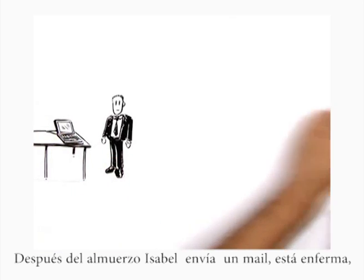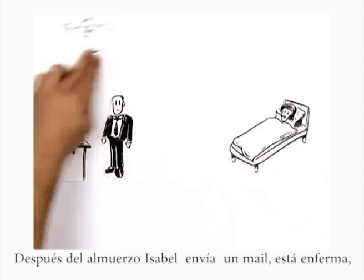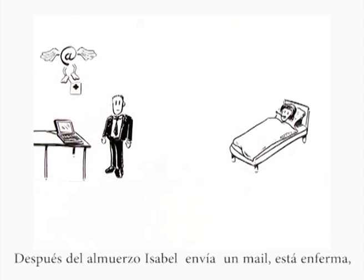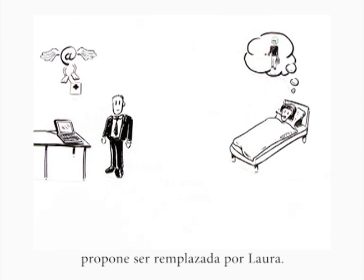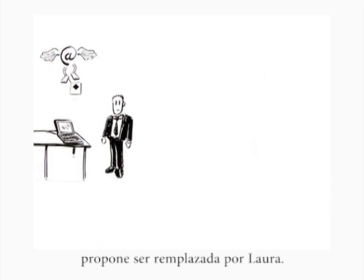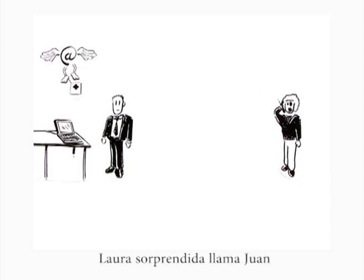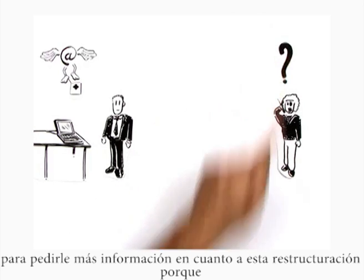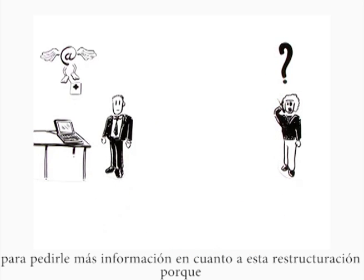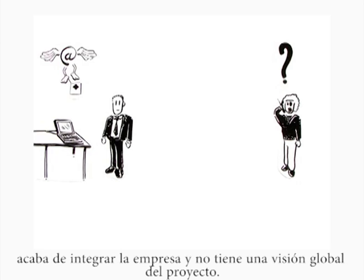After lunch, Rachel sends Paul an email — she's ill, and proposes that Hillary takes her place. Hillary then calls Paul. She's not very enthusiastic about the matter, and asks him for more information about the planned reorganization, since she's new to the company and doesn't yet have an overview of the project.